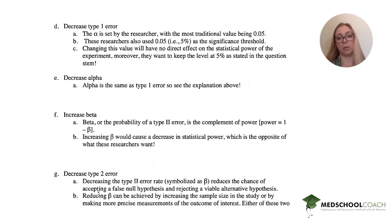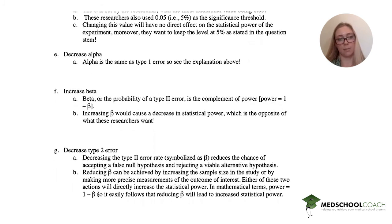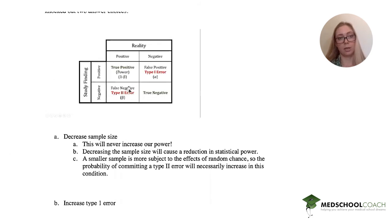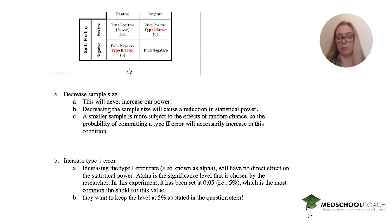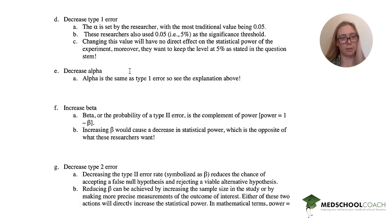Decreasing type 2 error is the same as decreasing beta. So this is type 2 error. If we decrease type 2 error, we're decreasing beta. If we're decreasing beta, we're increasing the amount of power that a study has. So that sounds like a great answer choice.